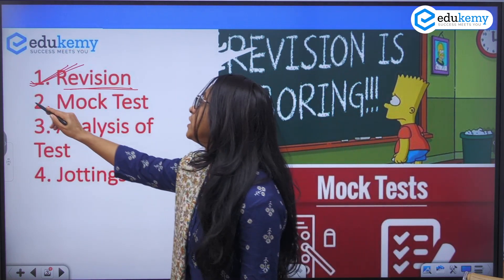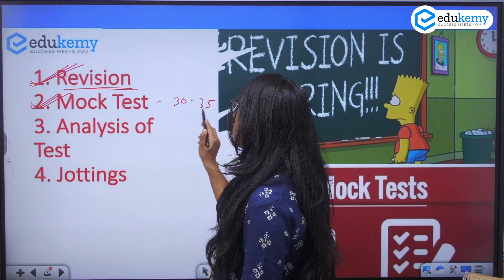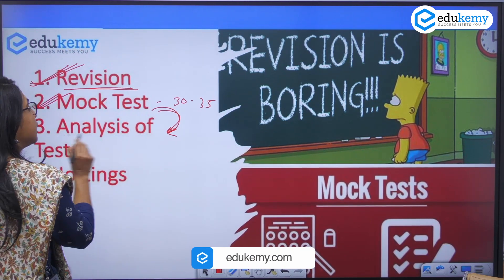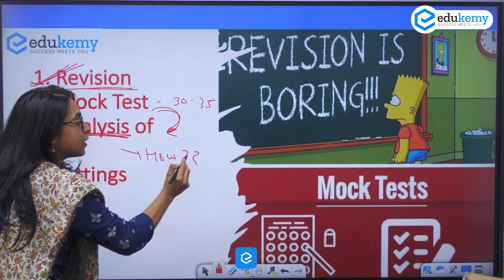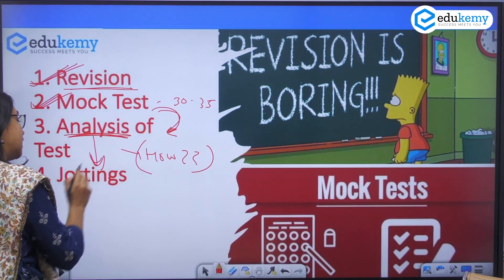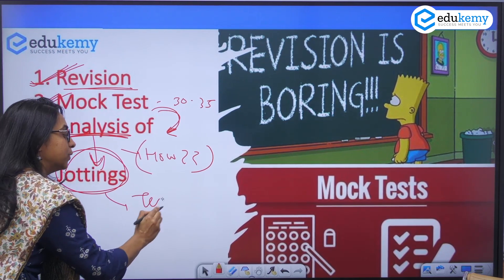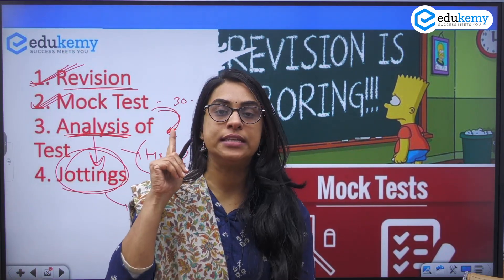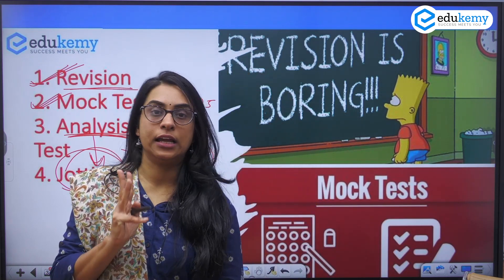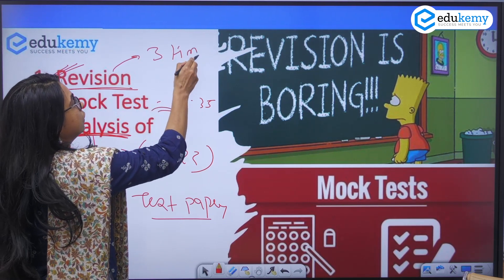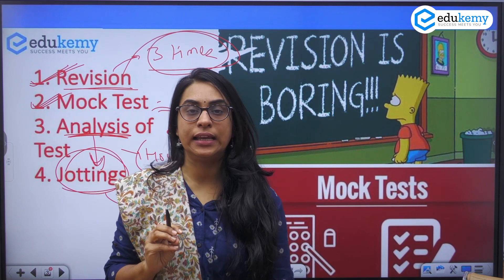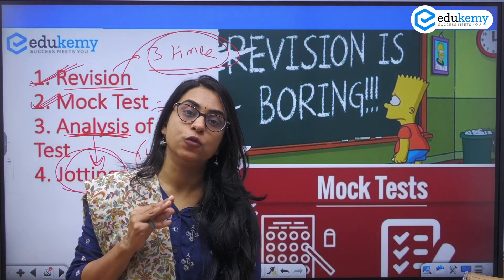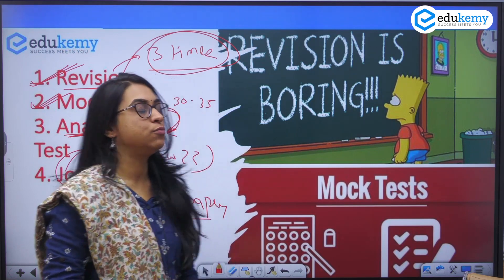The second important prerequisite is mock tests. Solve around 30 to 35 mock tests before you appear for your final prelims examination. Not only solving the mock test is important, but the analysis of the test. How should you do analysis — we will look into that. And after the analysis, what are the jottings you have to make from the mock test paper. Two important things: revision of whatever you have read at least three times, and mock tests with analysis and jottings.